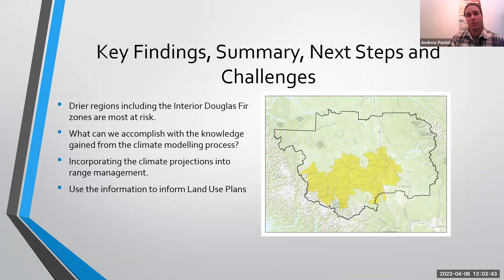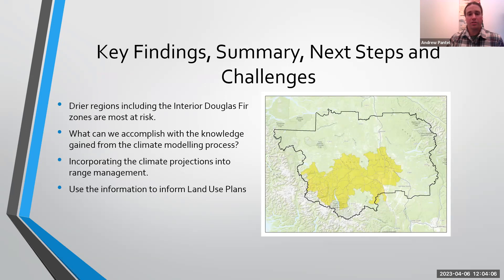This led to key findings and summaries. Generally it was showing, as we're well aware, that the interior Douglas fir zones are most at risk to changes in surface water for livestock, because those are areas that have probably the higher forage potential. The process also involved incorporating climate projections into range management and taking large landscape-scale models and incorporating them into on-the-ground planning.